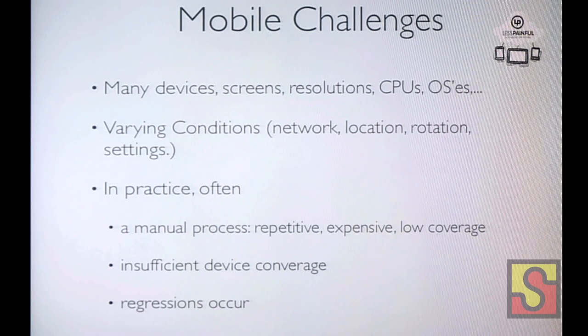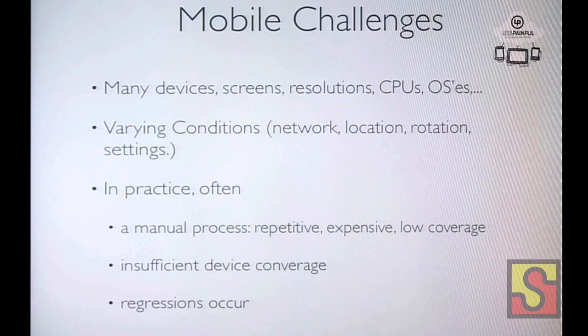Varying conditions in terms of network and location is one of the things that makes testing cumbersome. If you want to test how your app works moving between Edge and 3G network, you have to actually move between those networks or lose connectivity. Similarly, since devices track location and your app probably depends on it, you may need to move to a location to test that. Rotation affects how the app works, and phone settings like language will also affect it.